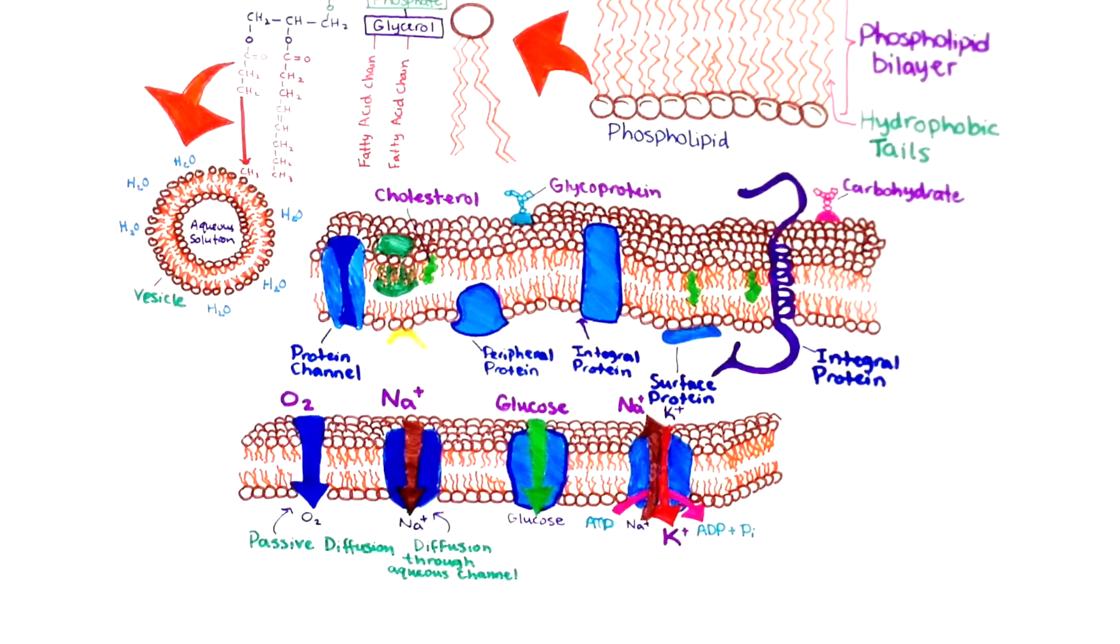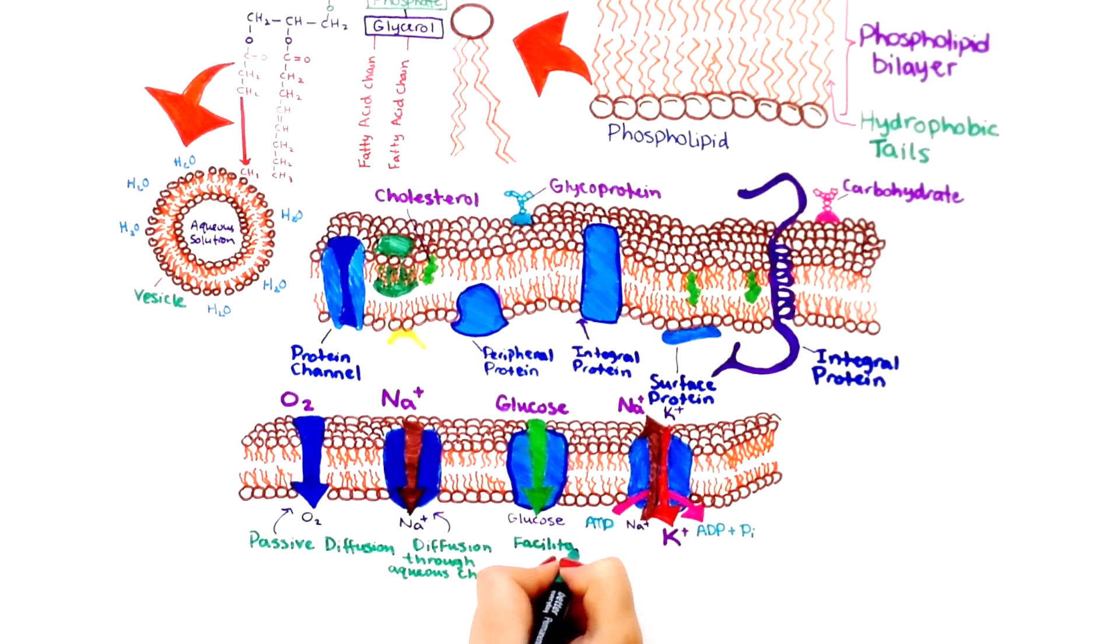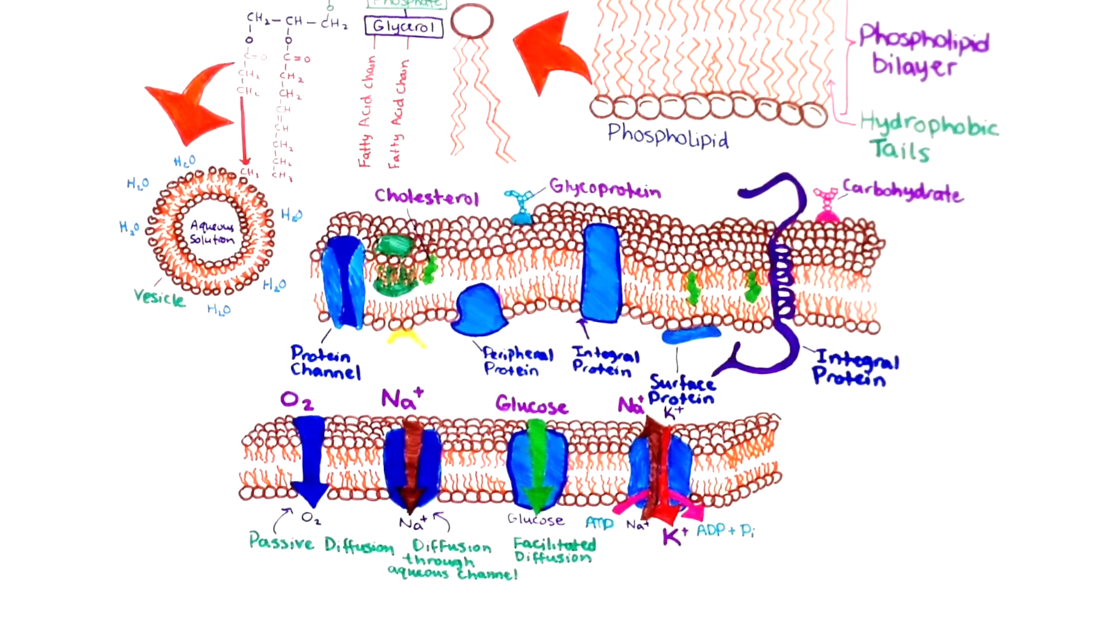On the other hand, carrier proteins have a binding site for a specific solute and constantly flip between two states so that the site is alternately open to opposite sides of the membrane. The substance will bind on the side where it is at a high concentration and be released where it is at a low concentration.